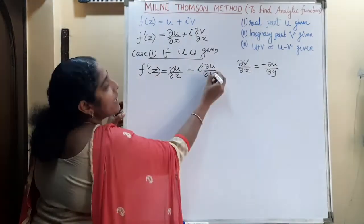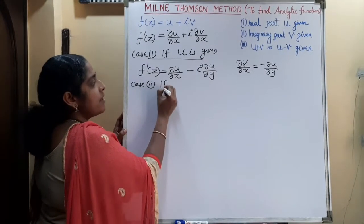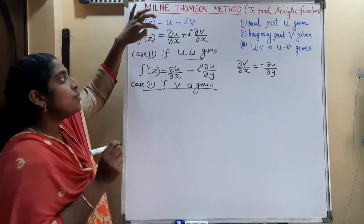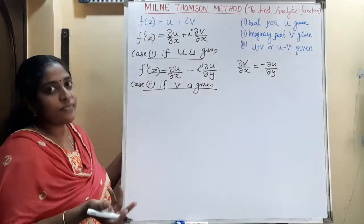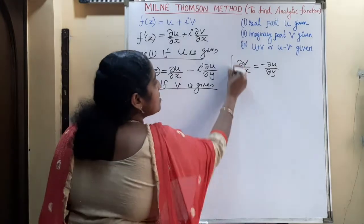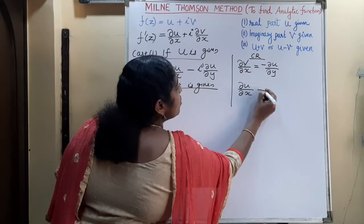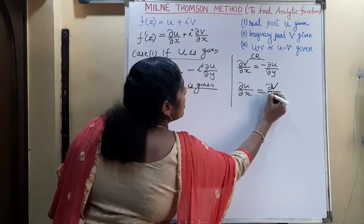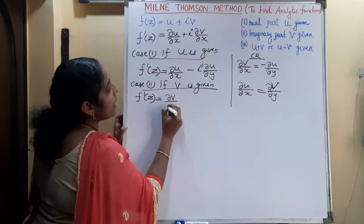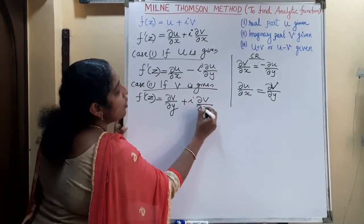Case 2: if the imaginary part V is given, we have to replace the real part term ∂U/∂X, which we don't know. We use the first Cauchy-Riemann condition: ∂U/∂X = ∂V/∂Y. So F'(z) = ∂V/∂Y plus i·∂V/∂X.